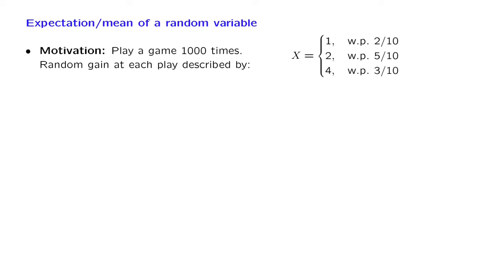Let us motivate with an example. You play a game of chance over and over, let's say a thousand times. Each time that you play, you win an amount of money, which is a random variable. And that random variable takes the value 1 with probability 2/10, the value of 2 with probability 5/10, the value of 4 with probability 3/10. You can plot the PMF of this random variable. It takes values 1, 2, and 4, and the associated probabilities are 2/10, 5/10, and 3/10.